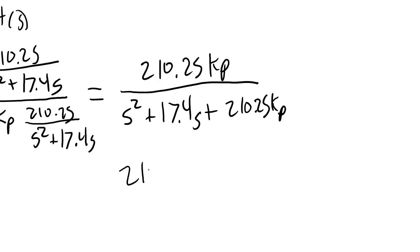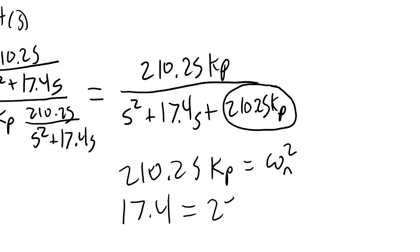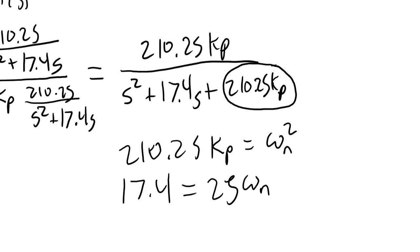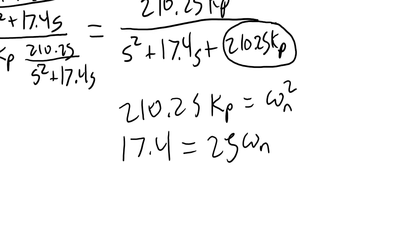Here, we know that 210.25 kp is equal to omega n squared, because this expression shows up here in the same location as omega n squared. We can also say that 17.4 is equal to 2 zeta omega n. So how could we use this to find a control gain value for kp?